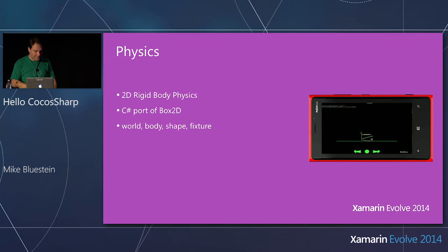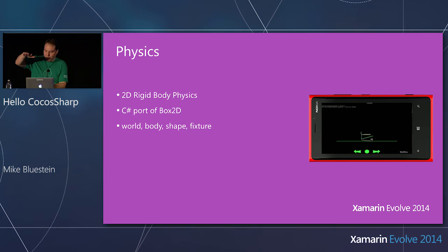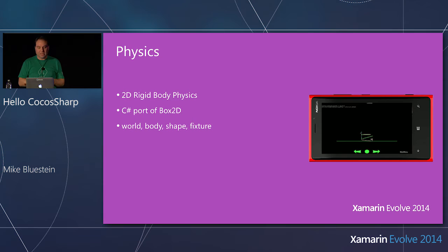Some of the cooler 2D games implement physics. 2D physics games are always fun — rigid body physics. There's an API called Box2D — it's actually what Angry Birds uses, and it's underneath the physics APIs Apple is shipping in their 2D game framework. But we have a C# port of it available. You can use the C# port of Box2D, or any 2D C# physics API and bring it in yourself. There's another one called Chipmunk that's available.